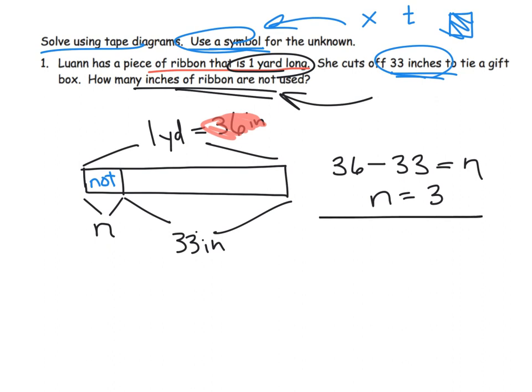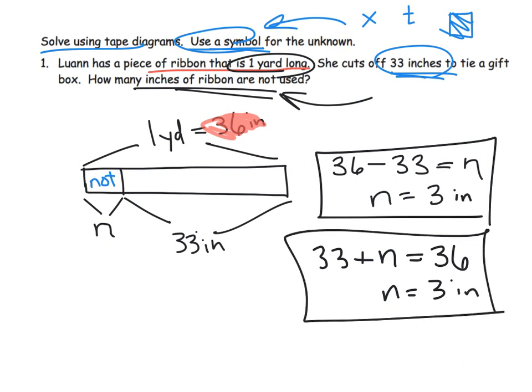By the way, this is not the only equation students could have come up with. Some students might've come up with 33 plus N is equal to 36, in which case N is still three. And really, we should call it three inches. So there's a couple of options, but here's the tape diagram. That's what the classic tape diagram would look like. Here's a couple of options for the equation. For the rest of the problems, I'm largely going to focus on our tape diagram.